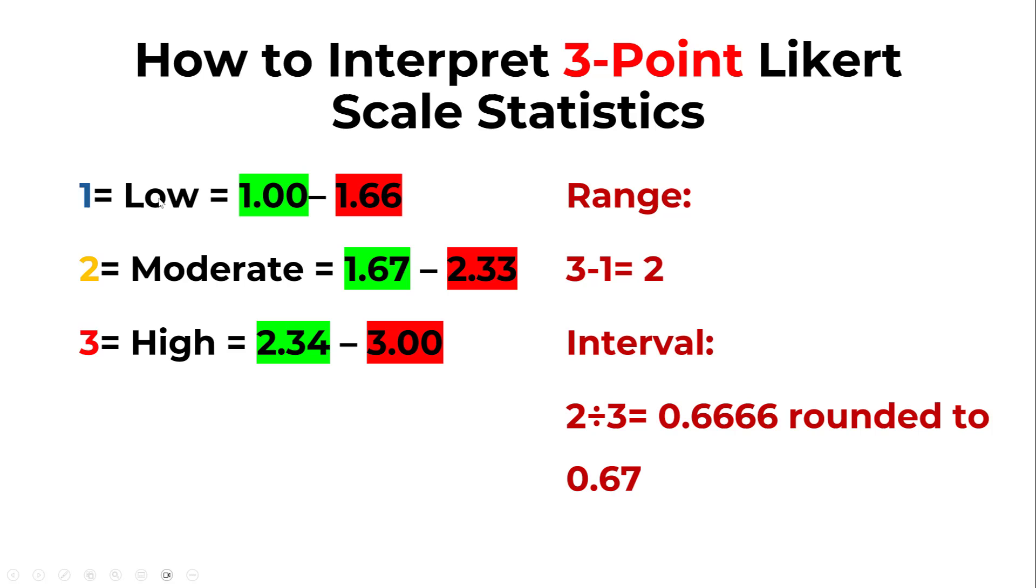That's why it's very important to code them from the lowest value given the lowest number to the highest value given the highest number, so that the statistics, the overall mean score or the summated score, make sense.